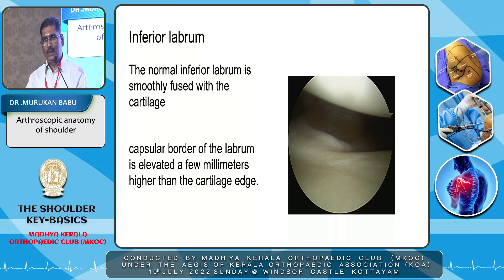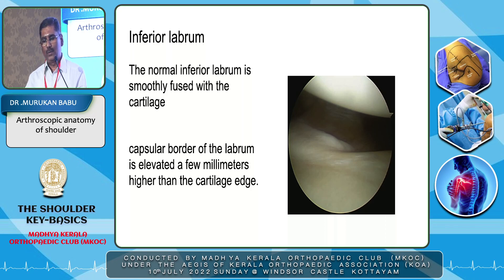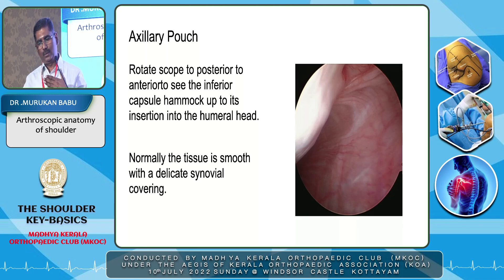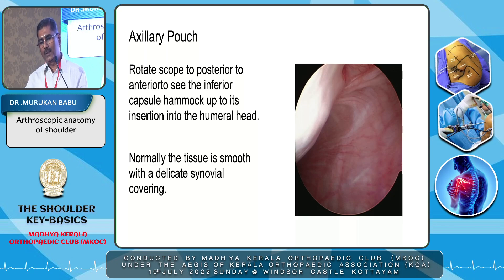The first thing in the third position is the inferior labrum — carefully look at it. The normal inferior labrum is mostly fused with the cartilage; the capsular border of the labrum is slightly elevated, a few millimeters higher than the cartilage edge. The next thing in this position is the axillary pouch — you rotate the scope anteriorly and posteriorly to see the inferior capsular hammock. You all know that the inferior glenohumeral ligament has anterior and inferior bands. See the axillary pouch — normally the tissue is smooth with a delicate synovial covering.